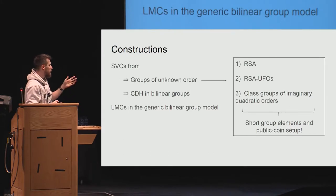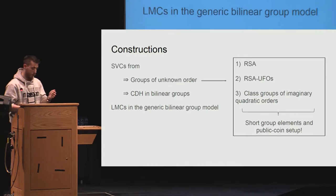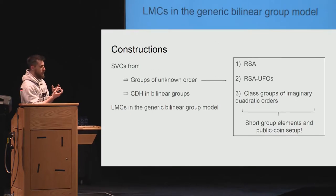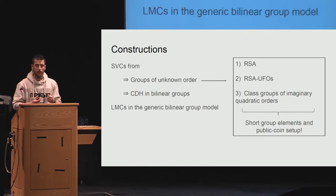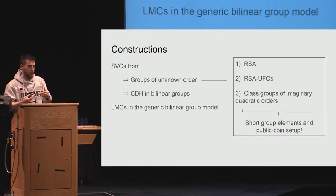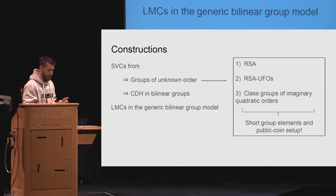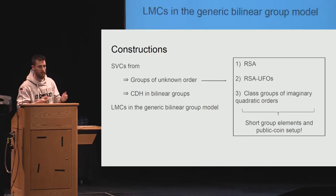Among the most interesting groups of unknown order, in my opinion, are class groups of imaginary quadratic order. This is interesting because it allows elements to be represented succinctly—there are relatively short group elements—and it doesn't need a trusted setup. You still need a setup, but it can be done with public coin: you just hash with a random oracle and those are your parameters.